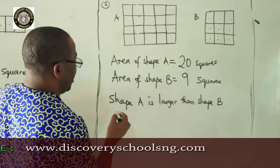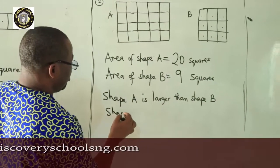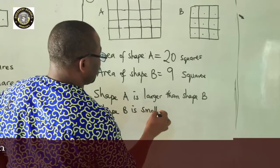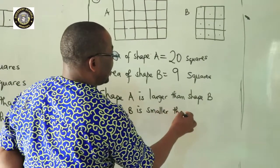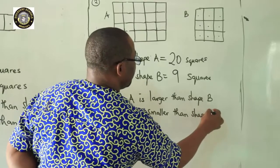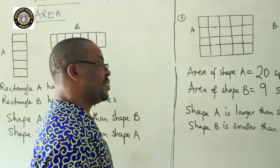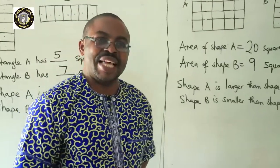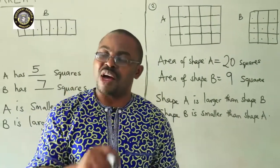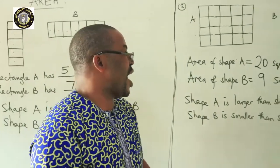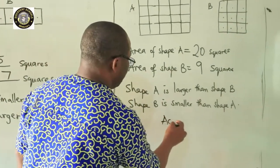We can say shape A is larger than shape B. And also we can say shape B is smaller than shape A. So, we have been able to know that area can be cut in by counting the number of boxes inside a shape. So, for your activity now. Activity 2.